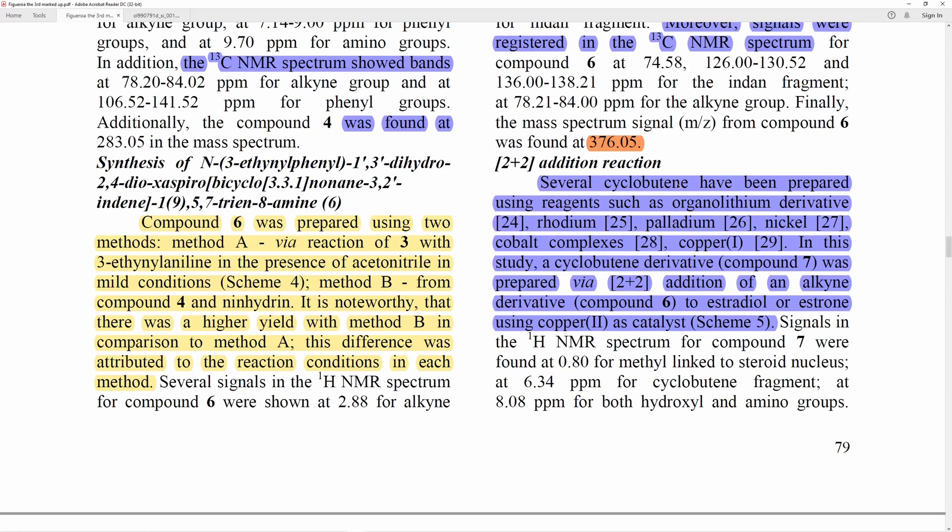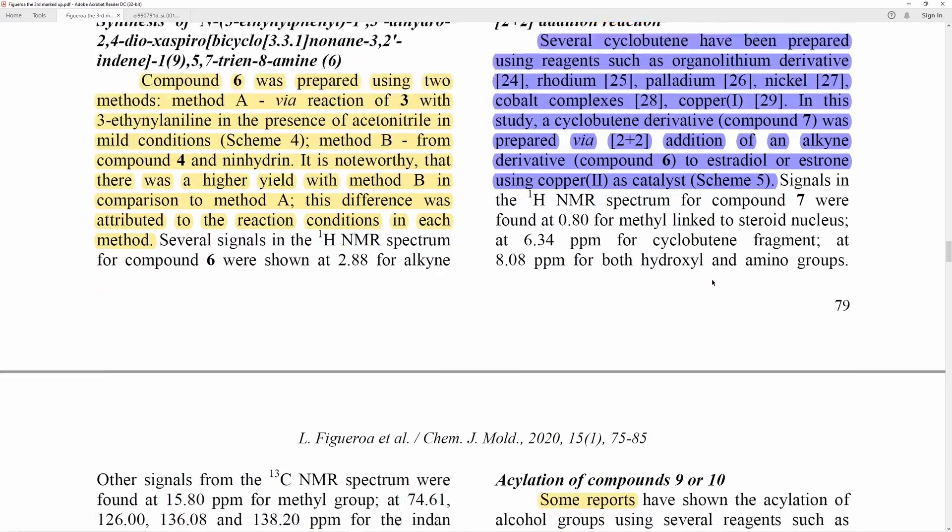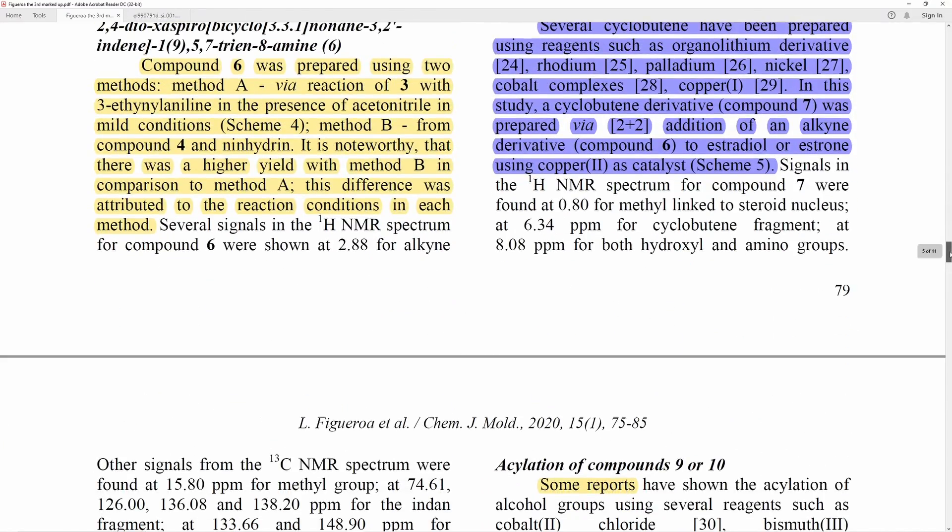Several cyclobutene have been prepared using reagents such as organolithium derivative, rhodium, palladium, nickel, cobalt complexes, copper-1. In this study, a cyclobutene derivative was prepared via 2-plus-2 cycloaddition of an alkyne derivative to estradiol or estrone using copper-2 as catalysts. Yeah, let's look at, let's go forward and see what that looks like. So scheme 5. Let's go to scheme 5.